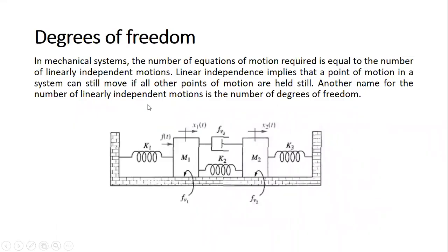For translational mechanical systems, we have the term 'degrees of freedom.' The degrees of freedom is the number of equations of motion required, which equals the number of linearly independent motions. Linear independence implies that a point of motion in a system can still move if all other points of motion are held still. We can associate the degrees of freedom with the number of linearly independent motions in a given mechanical system.